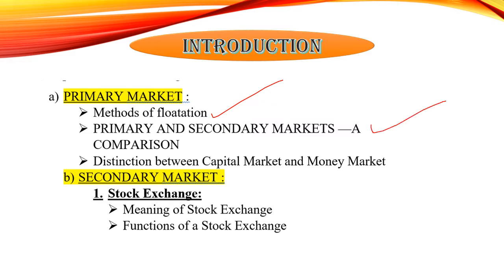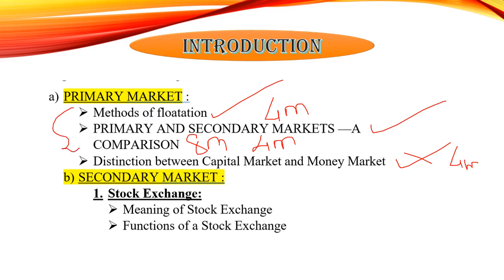In terms of marks, methods of flotation will come for a four marker or maybe an eight marker — please write it down. Today we are concentrating on these two topics: methods of flotation and the difference between primary market and secondary market. After primary market, we will be learning about secondary market, where the first topic is stock exchange — its meaning and functions, which are very important and frequently asked in exams.